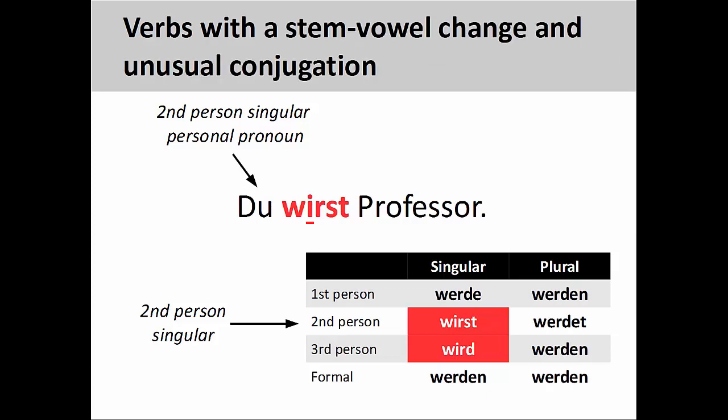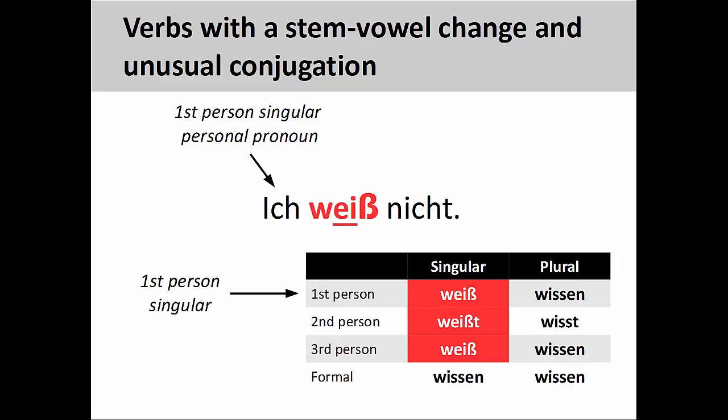Some verbs have a stem-vowel change in addition to an unusual conjugation pattern. The verb werden, to become, for example, has a stem-vowel that changes from e to i and unusual verb endings in the second- and third-person singular: du wirst Professor — you become a professor. The verb wissen, to know, has a stem-vowel change from i to ei in all singular forms and unusual verb endings in the first- and third-person singular: ich weiß nicht — I don't know.